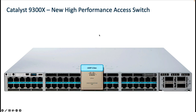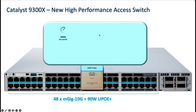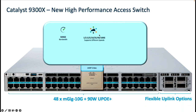The Catalyst 9300X is based upon a new UADP 2.0 Sec ASIC which is capable of providing 500 gigabits of bandwidth. That is how we were able to achieve all 48 ports of multi-gig 10G bandwidth, as well as flexible uplink options ranging from 1G all the way to 100G of bandwidth.